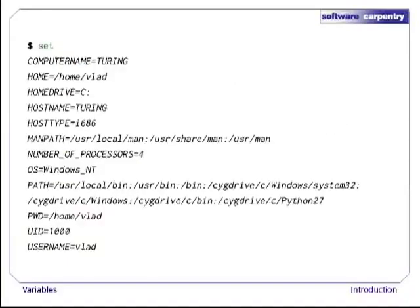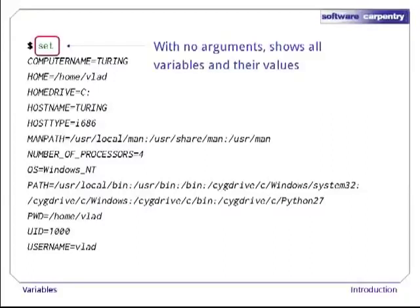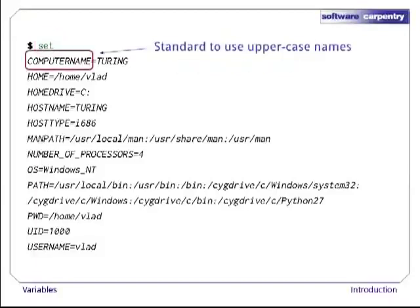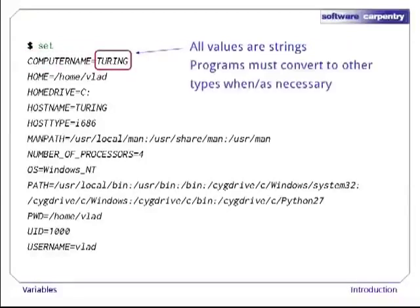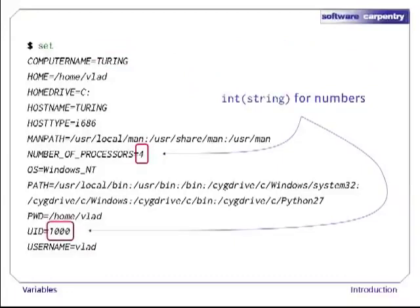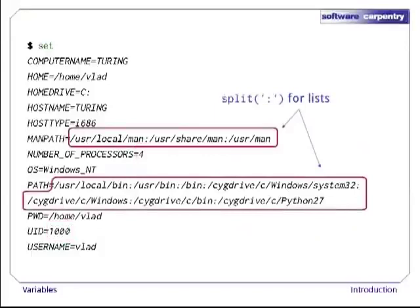Let's start by running the command set and looking at some of the variables in a typical shell session. As you can see, there are quite a few — in fact, four or five times more than what's shown on this slide. Using set to show things might seem a little strange, but if you don't give it any arguments, it might as well show you things you could set. Every variable has a name. By convention, variables that are always present are given uppercase names. If a program wanted to find out how many processors the computer had, it would convert the number of processors variable from a string to an integer.